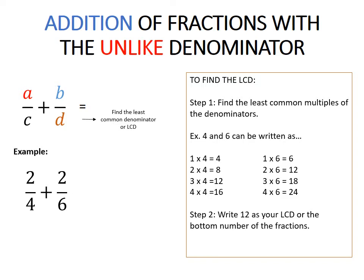For denominators 4 and 6, the multiples are: 1×4=4, 2×4=8, 3×4=12, 4×4=16; and 1×6=6, 2×6=12, 3×6=18, 4×6=24. Looking at these, we find that 3×4=12 and 2×6=12 share the same value. So 12 is the least common multiple, and this will be written in the denominator as the LCD, or least common denominator. Next, write 12 as your LCD — the bottom number of the fraction.